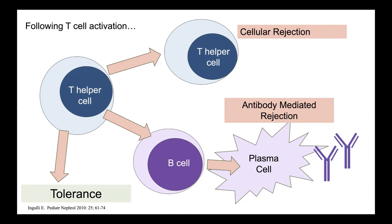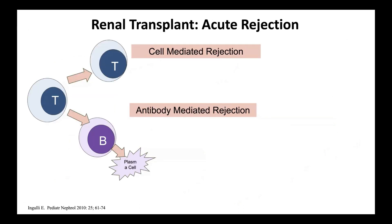T helper cells can also promote tolerance, which is really the reason transplant is possible at all. When we first do a transplant, we use very high doses of immunosuppression and then reduce it over time. Some T helper cells become T regulatory cells, which are all about peacekeeping — essentially saying we see the kidney but we don't have to attack it. Tolerance is something we'd love to harness further, but we're not there yet.